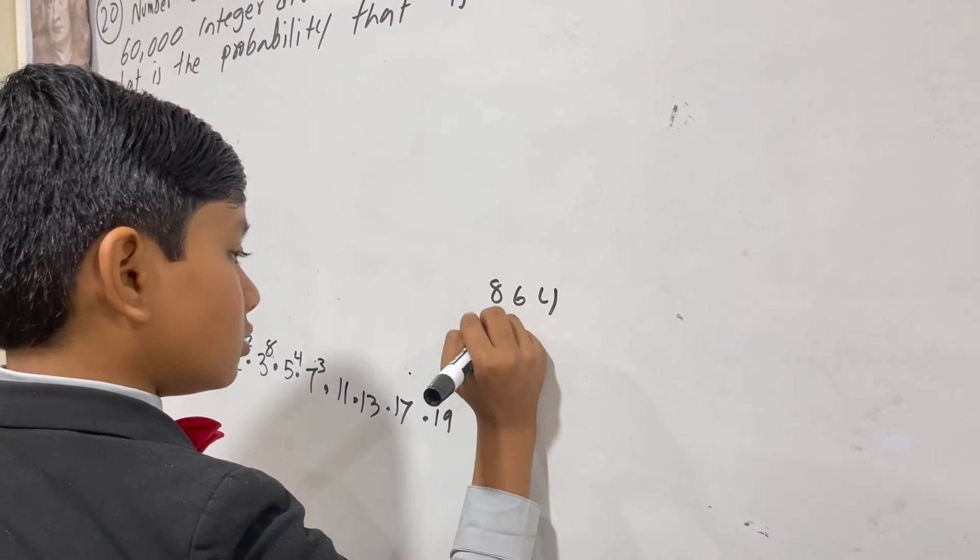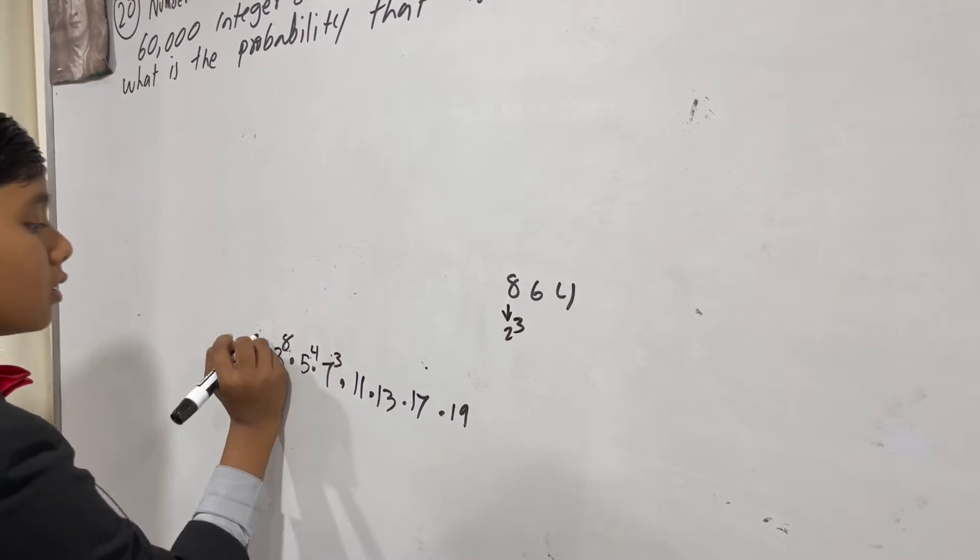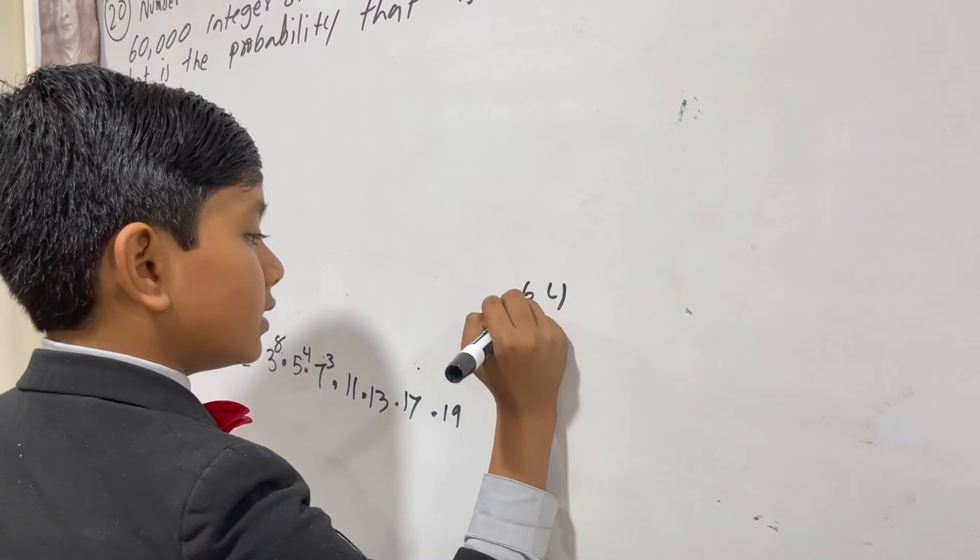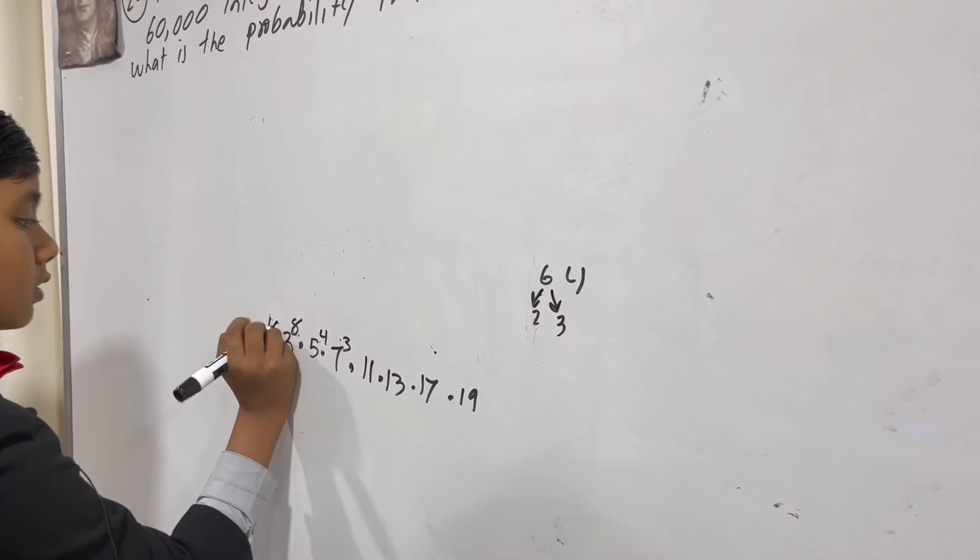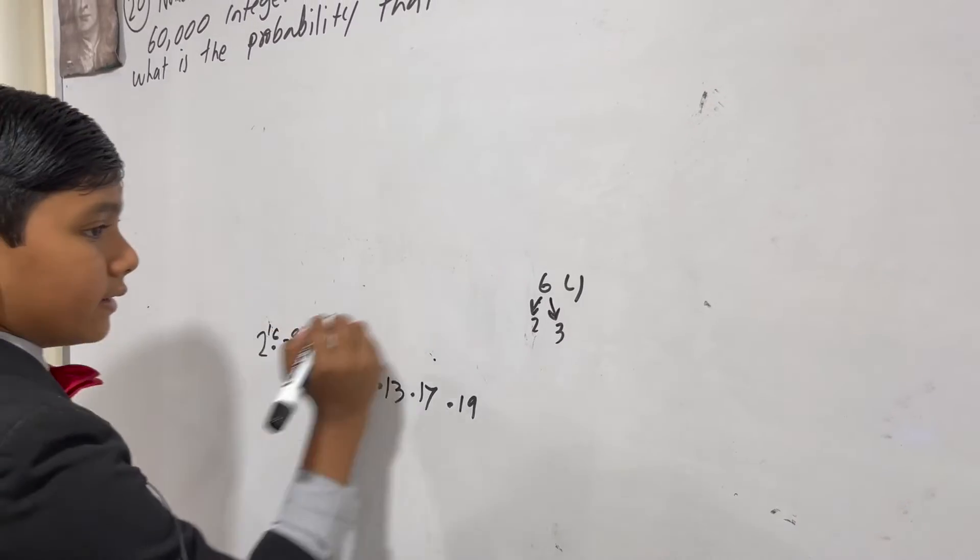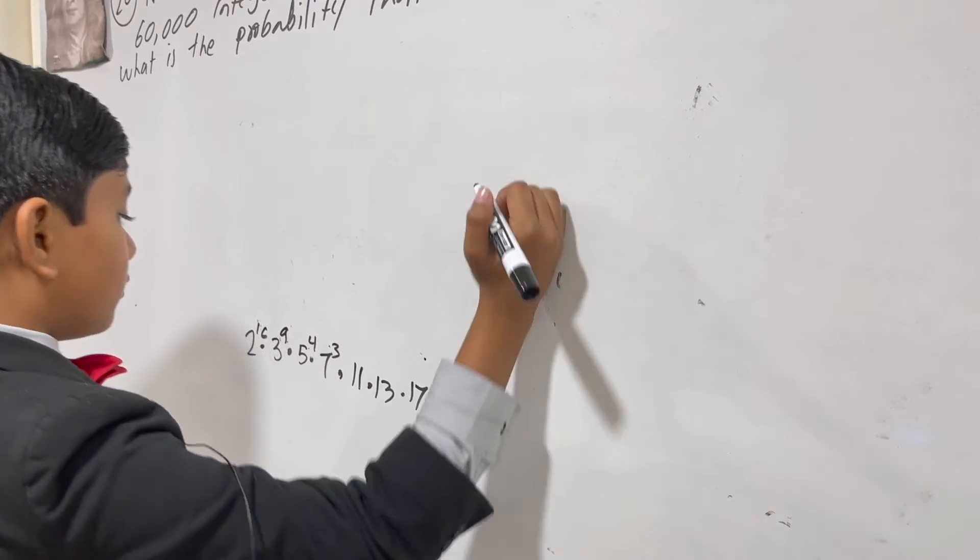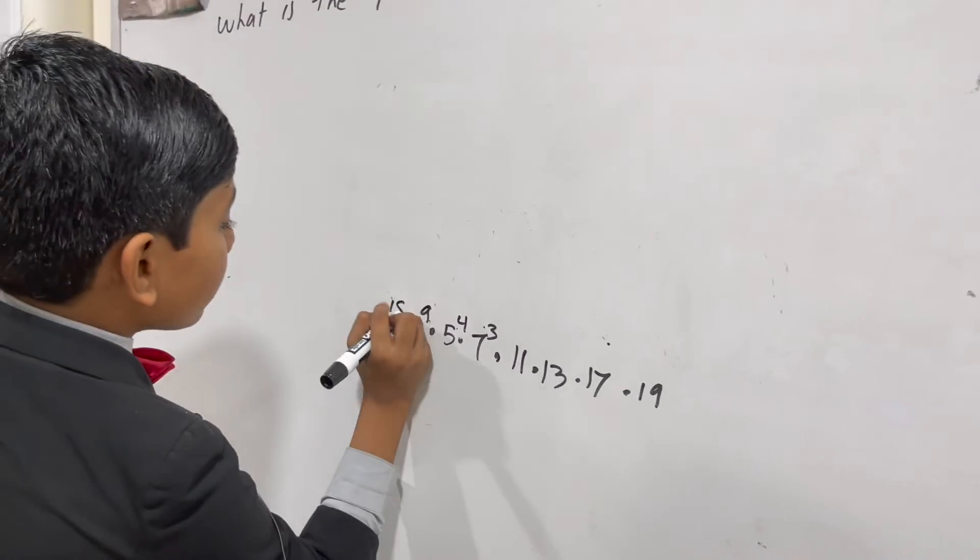And we're almost finished. 8 is just 2 cubed. 6 is 2 and 3. And 4 is 2 squared.